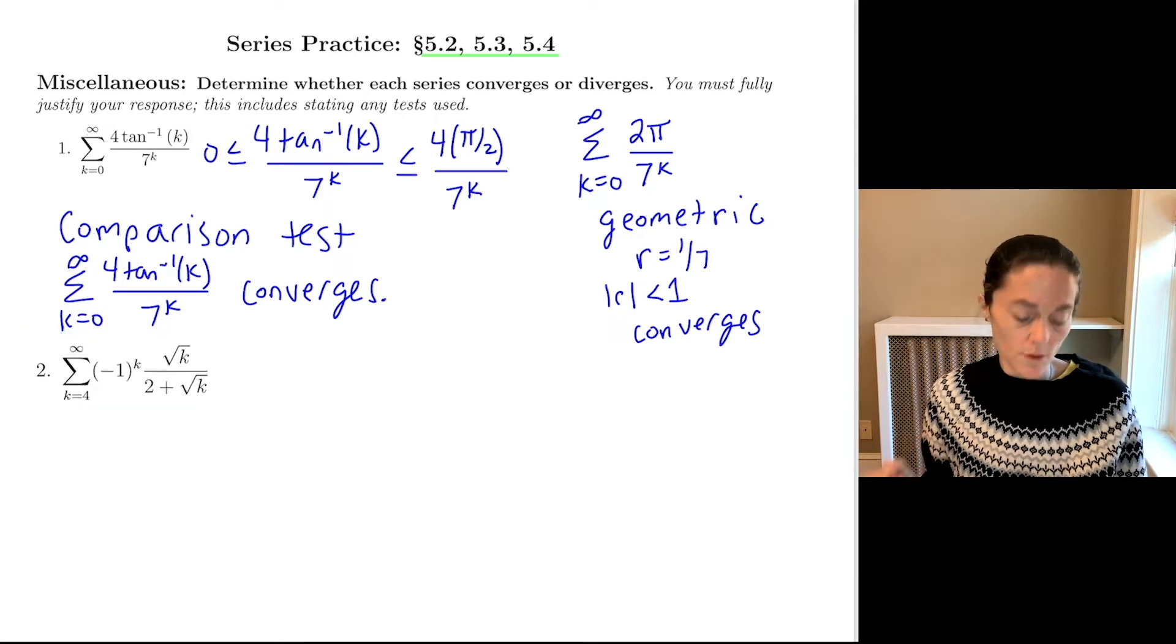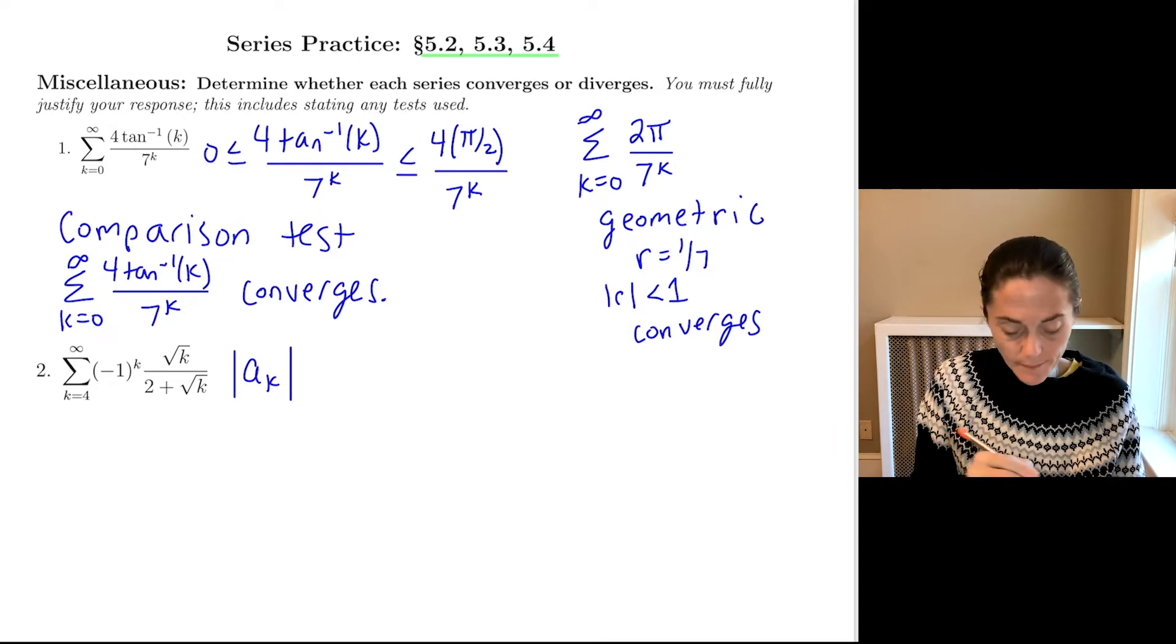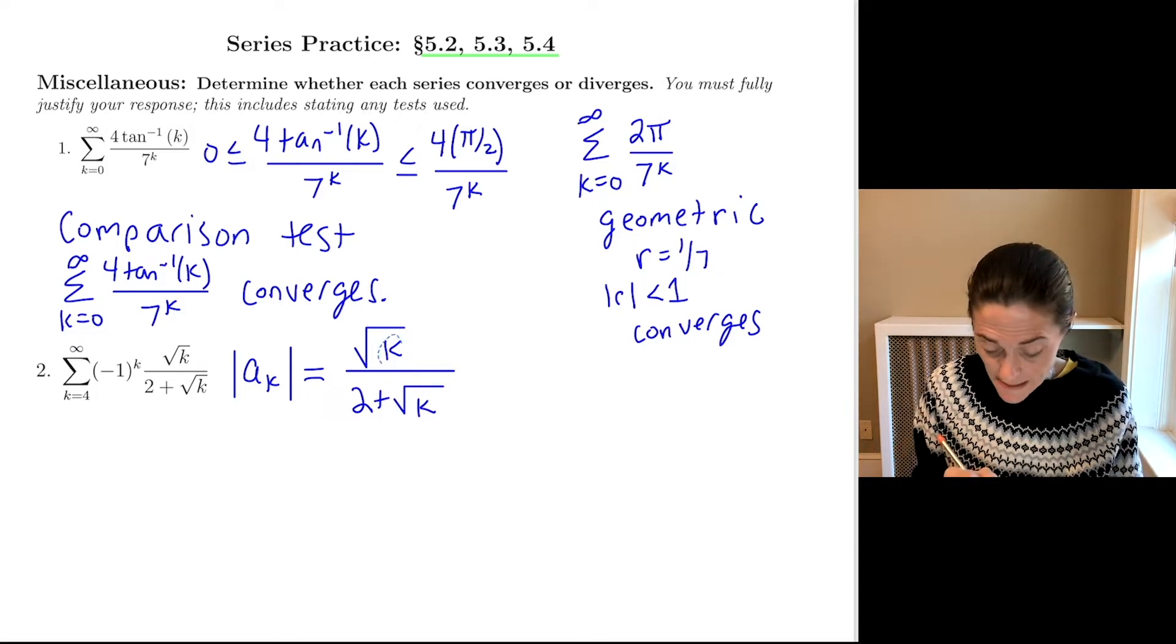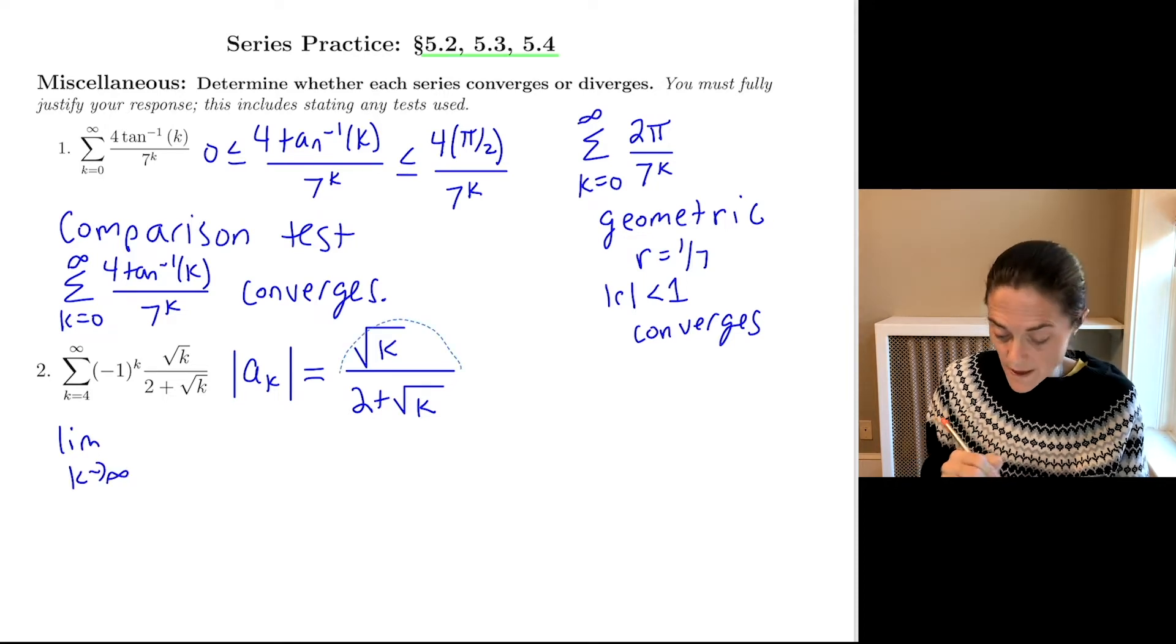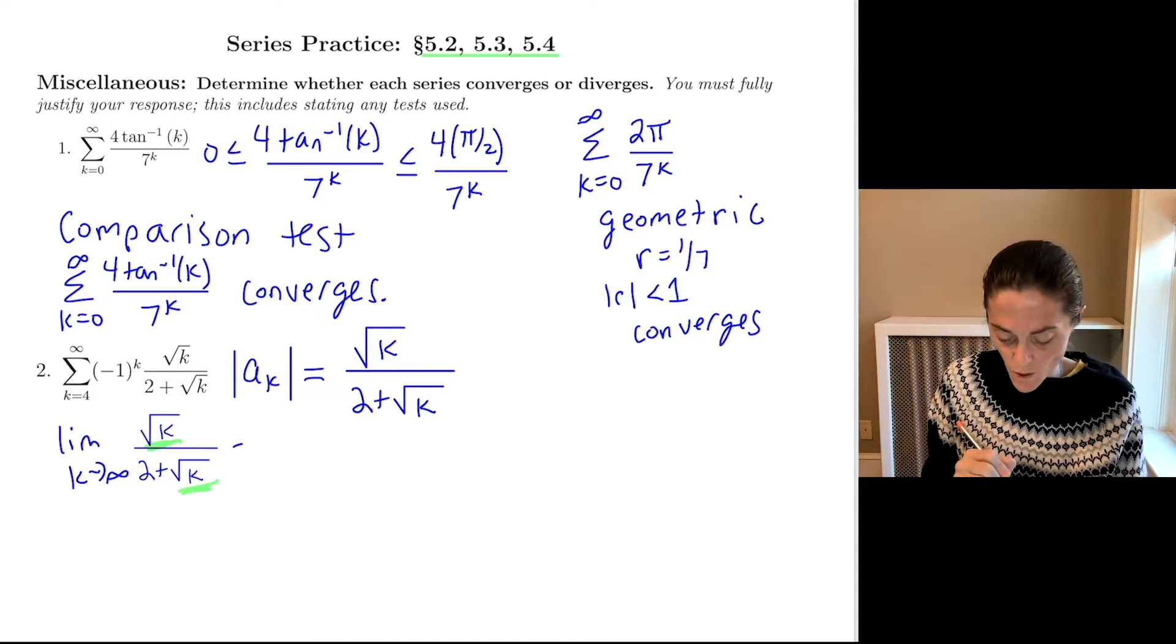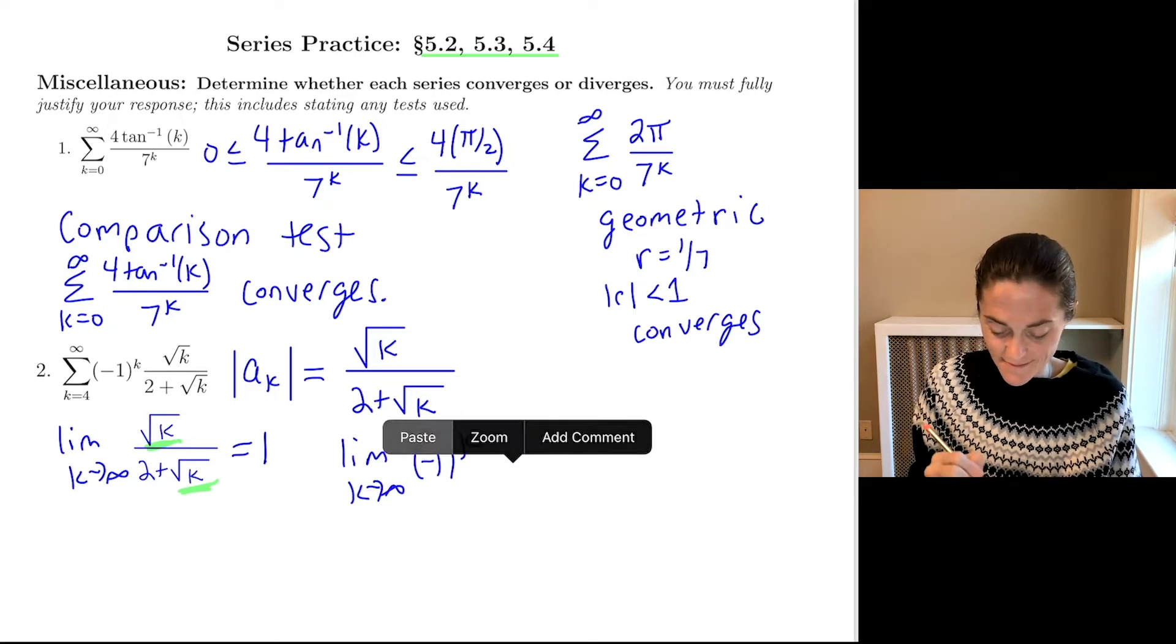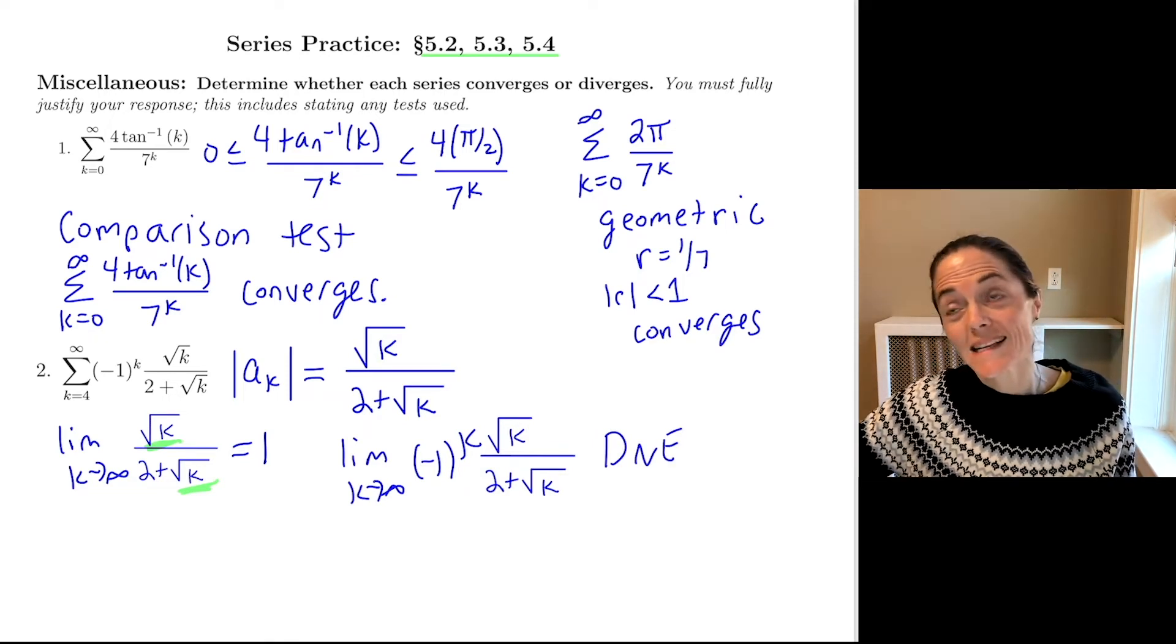Next question. You notice this is an alternating series. Number two. When I'm doing an alternating series, first thing I do always is I look at the absolute value of the terms and see what's happening. So absolute value of a_k is here. It's the square root of k divided by 2 plus the square root of k. What do we see here? These terms are not going to zero. We take a limit as k goes to infinity of the absolute value of a_k, which is here. You see here we have a square root of k and also square root of k. This limit is 1.